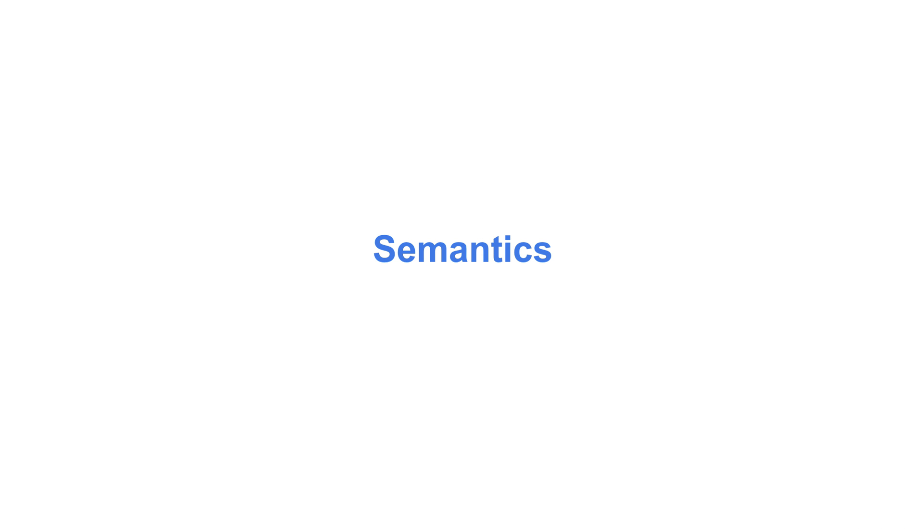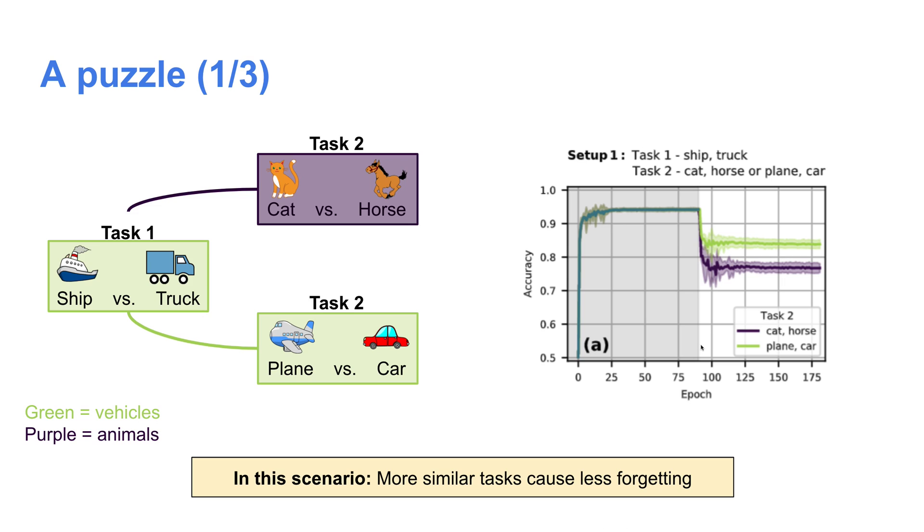Now let's move on to semantics, which is the second part of our study. It turns out that this understanding of deeper layers from the previous part will be important to understand precisely how semantics affects forgetting.